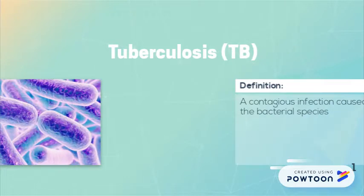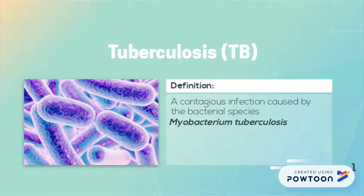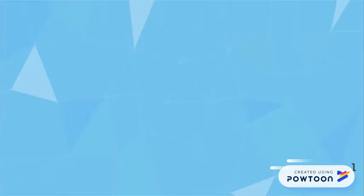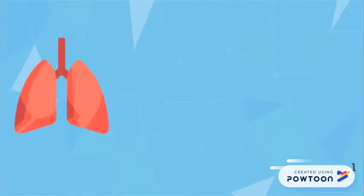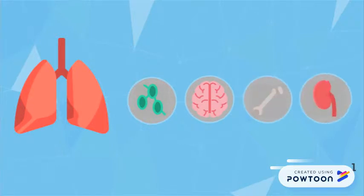Tuberculosis is a contagious infection caused by the bacterial species Mycobacterium tuberculosis. It commonly attacks the lungs but also has the potential to infect the lymph glands, brain, bones, joints, kidneys, and other parts of the body.